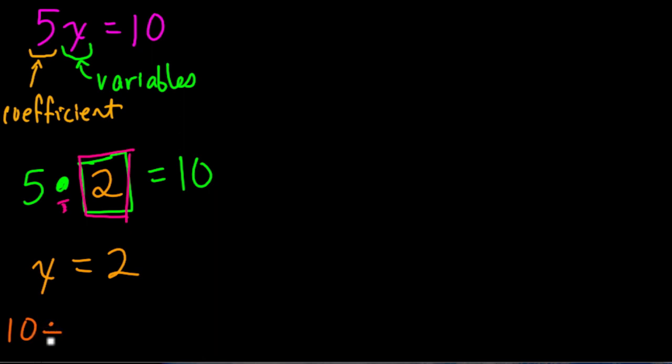If it's 5 times something is 10, we can work backwards using the inverse operation. 10 divided by 5 will give you x. And in this case, 10 divided by 5 is 2, so x equals 2. That's a strategy we can really carry with us.